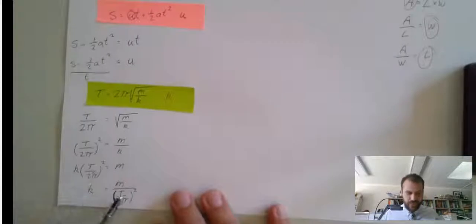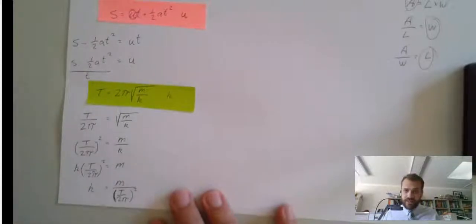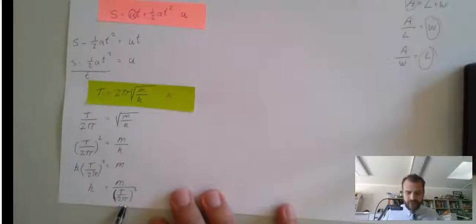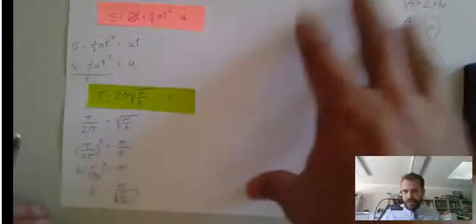If you want to talk to me further about how to neaten that up, or if you want to try neatening it up yourself, hint, maybe try expanding this first, and then moving from there. Getting rid of the squared sign by squaring t and squaring 2 pi. You can move from there.